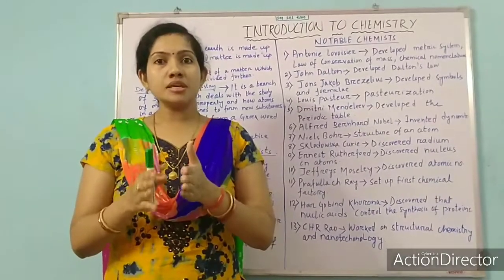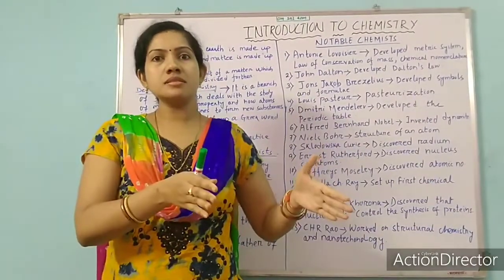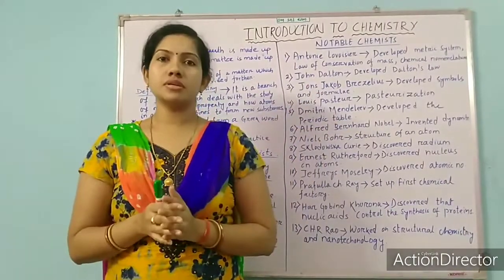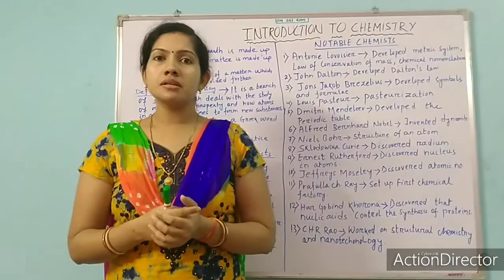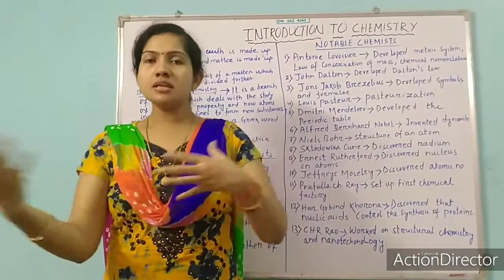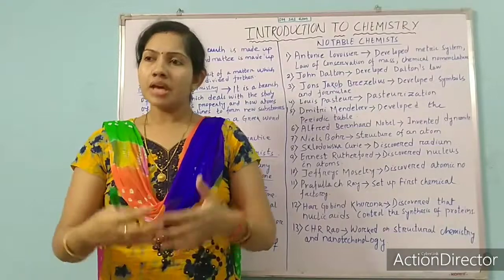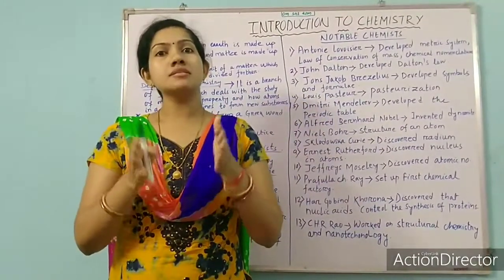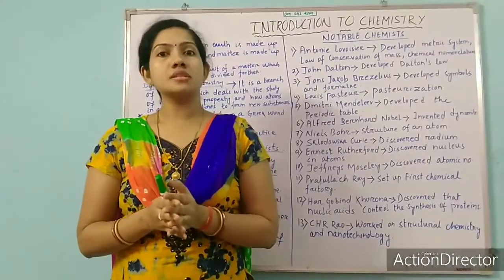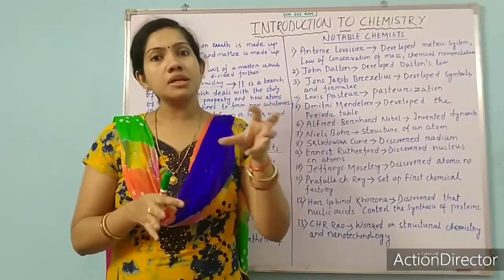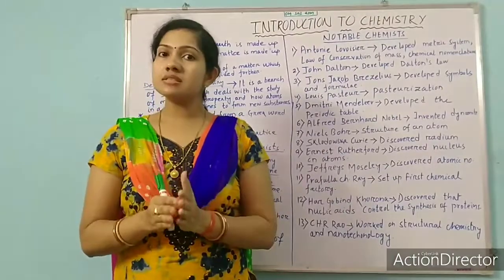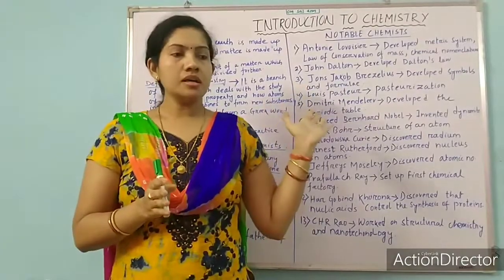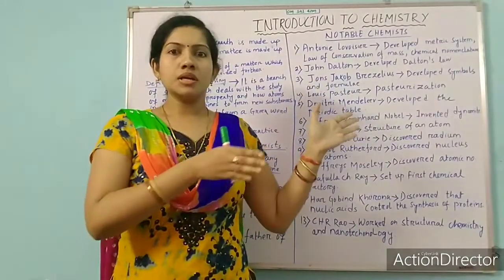But chemistry is not only these things. Rather, we can say everything around us is chemistry — the air we breathe, the cloth that we are wearing, the things that we are using in our everyday life. Everything around us, all the matter around us, is chemistry, because they are made up of some types of chemical constituents.